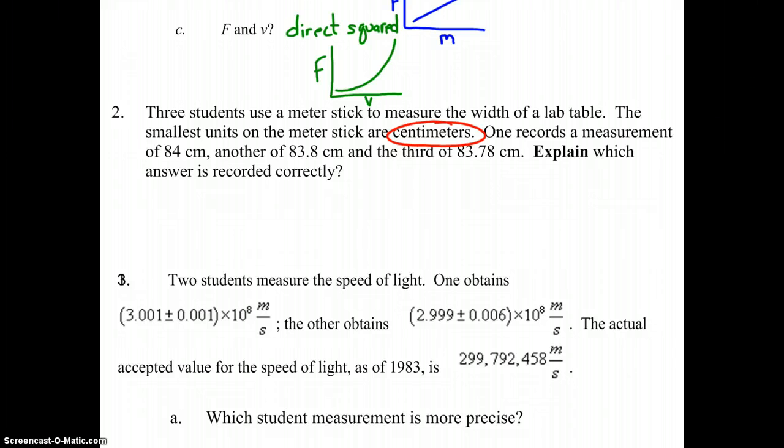So which one of these measurements shows that? Well, 84 centimeters simply states that you're confident that there's 80 centimeters, and confident that there's four, but doesn't show any guess. The third measurement says that we're confident that there's 80 centimeters, confident that we're three centimeters, that we're confident of 0.7 centimeters, and that we're guessing 0.8 of a centimeter. That's not possible when your centimeters are the smallest unit on your scale. So you would not be able to guess in the hundredths place.